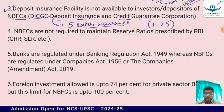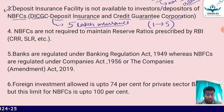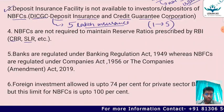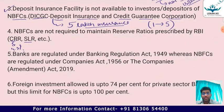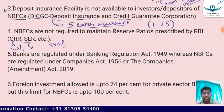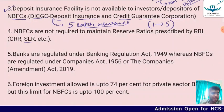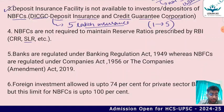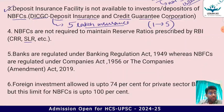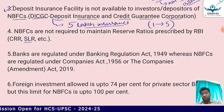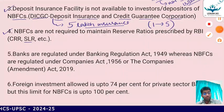The fourth point: NBFCs are not required to maintain reserve ratios prescribed by the RBI. Banks are required to maintain Cash Reserve Ratio (CRR) and Statutory Liquidity Ratio (SLR). CRR is around 4.5 percent and SLR has an upper limit of 40 percent, currently around 18 percent. These restrictions do not apply to NBFCs — they are not liable to maintain CRR and SLR.